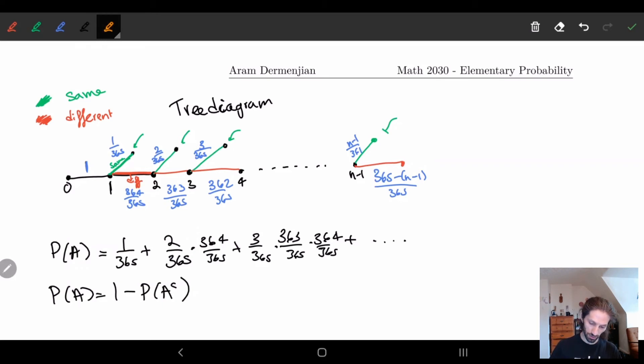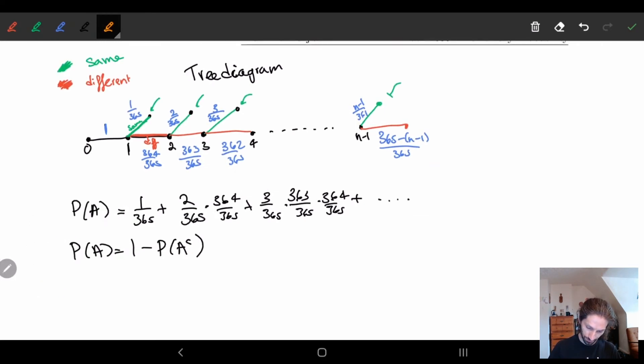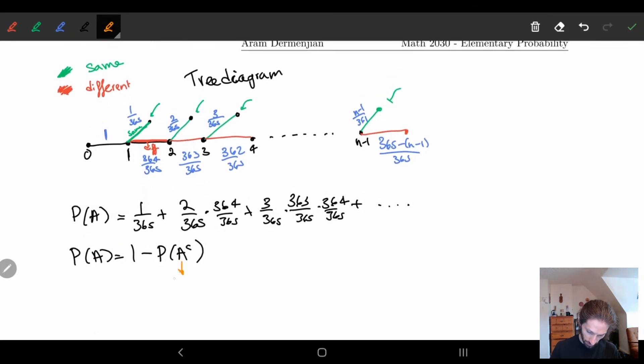What's the probability of A complement? The probability of A complement is that all of these things fail. In other words, this is saying that no two people have the same birthday. If you look on our tree diagram we have this already—we just follow all the red paths.